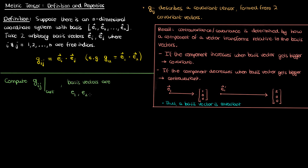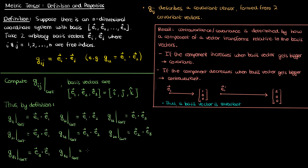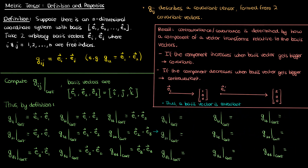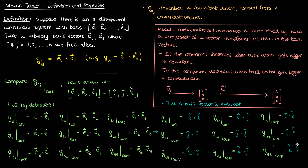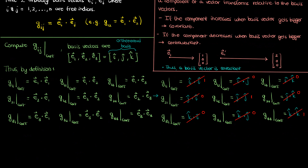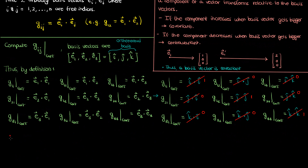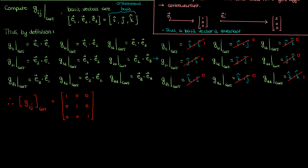My basis vectors in Cartesian coordinates are just the unit vectors i-hat, j-hat, and k-hat in the x, y, and z directions respectively. So the nine components of my metric tensor in Cartesian coordinates are given in terms of e1, e2, and e3, which we replace with i-hat, j-hat, and k-hat. Since i-hat, j-hat, and k-hat form an orthonormal basis, they are all perpendicular to each other and all have magnitude one. So the dot product of one of these basis vectors with itself is one, and the dot product of any two different ones is zero. Performing these substitutions, the metric tensor in Cartesian coordinates is the identity tensor, just as shown in the previous video — so things are consistent.